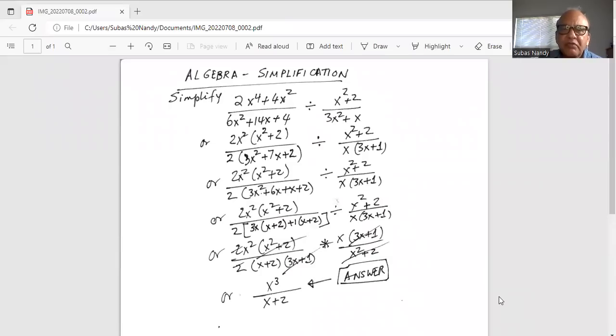Algebra simplification. Simplify 2x exponent 4 plus 4x square divided by 6x square plus 14x plus 4. The whole thing is divided by x square plus 2 divided by 3x square plus x.